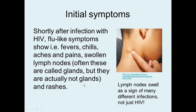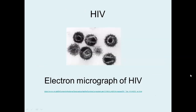Let's have a look at the electron micrograph of HIV. This is a virus that is highly, highly magnified. All viruses have a capsid — that structure on the inside made of protein. In addition to that, inside the capsid, all viruses have some nucleic acid — some DNA or some RNA.